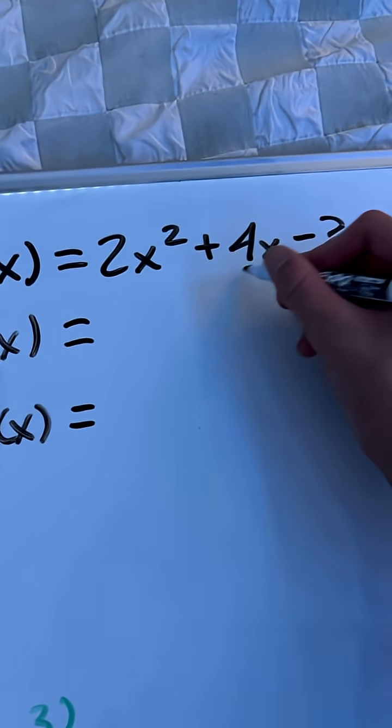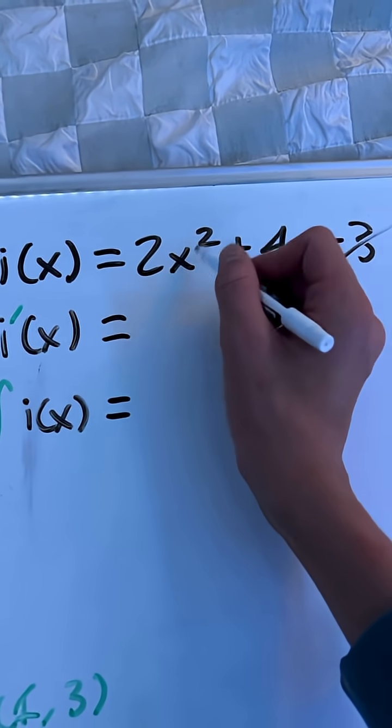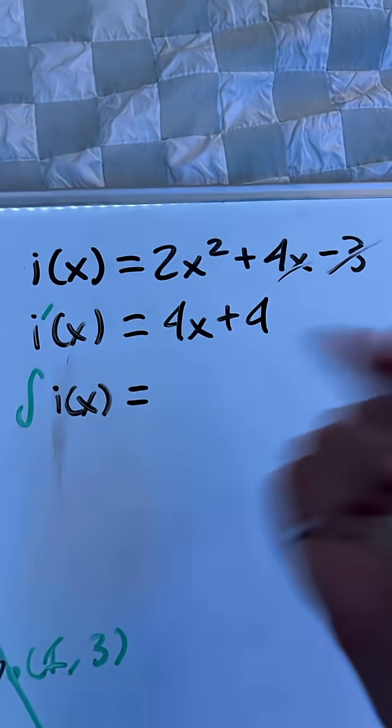So taking the derivative, this goes away, this x goes away, the two is multiplied in front, and then one is taken away from the exponent, so you get 4x plus 4.